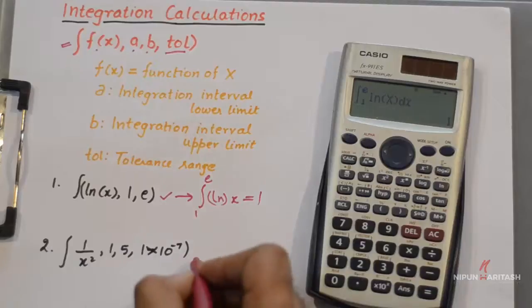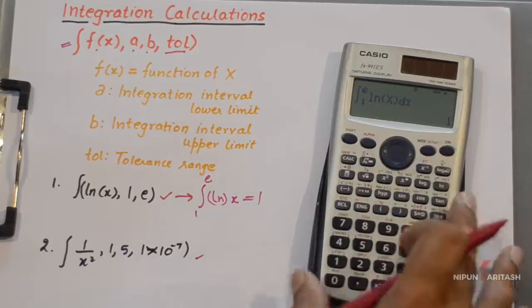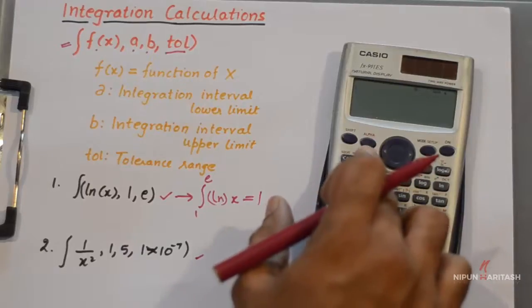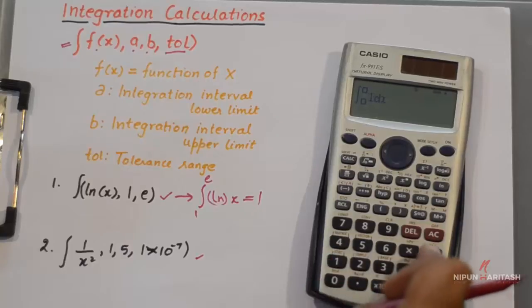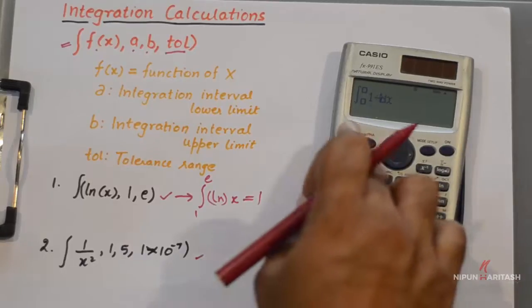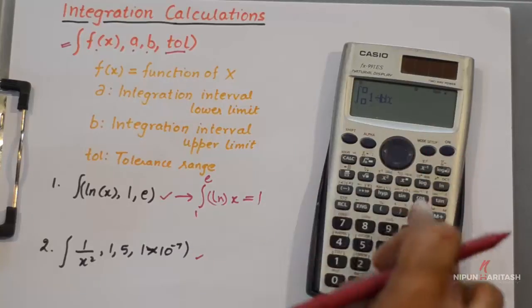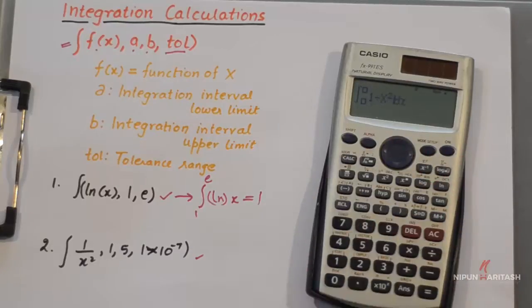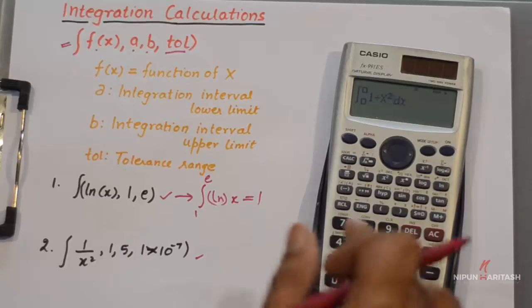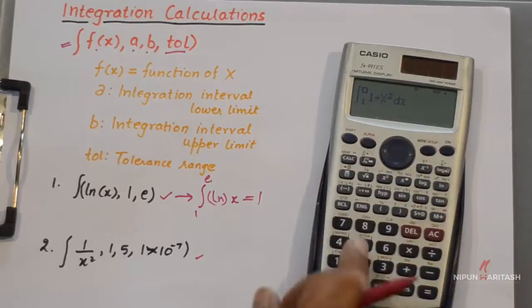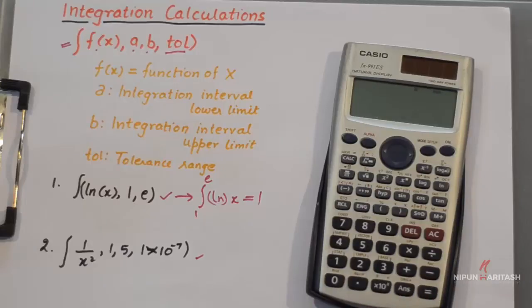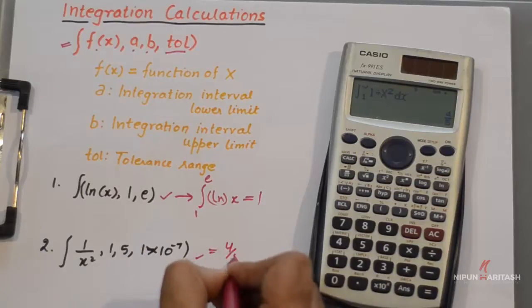Now let's perform another operation. I will clear this, then you can press integral sign. Now the function is 1 divided by x square, and the lower limit is 1, the upper limit is 5, and the answer is 4 by 5.